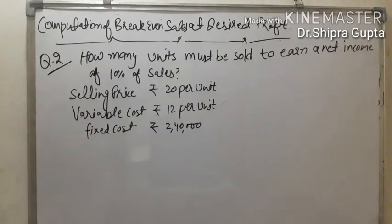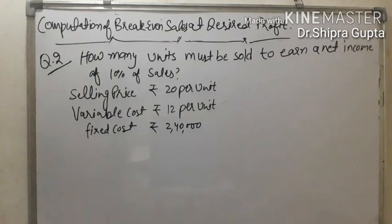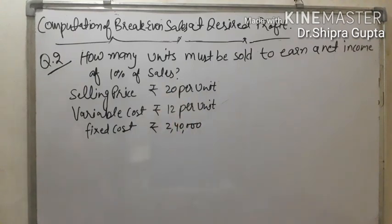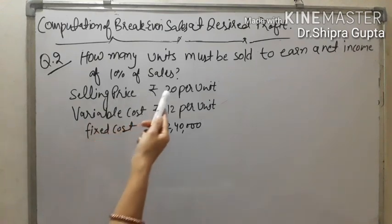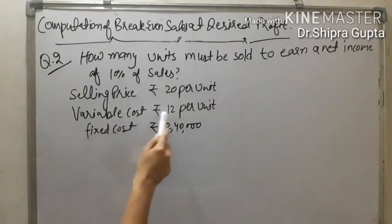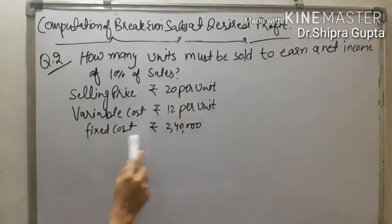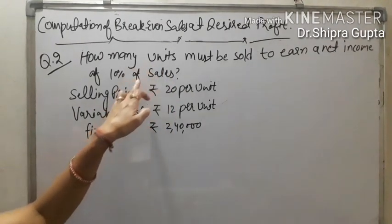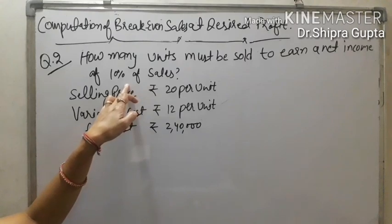We are doing another problem on computation of break-even sales at desired profit. But in this question, the profit is given as a percentage and per unit. The question: how many units must be sold to earn a net income of 10% of sales? Selling price is rupees 20 per unit, variable cost is 12 per unit, and fixed cost is rupees 2,40,000. Since profit is not given as a lump sum but in per unit form, we proceed accordingly.